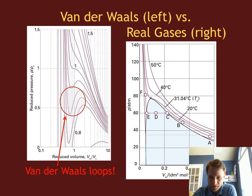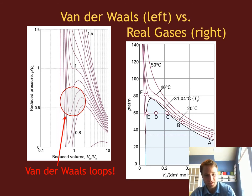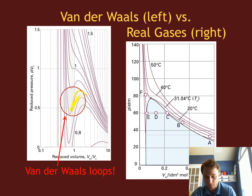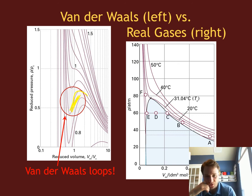The van der Waals equation of state does work better than the ideal gas equation, but it doesn't work everywhere. Specifically, there are what are called van der Waals loops, where as you reduce the volume, there's a case where the pressure decreases as well — which makes no physical sense. Decreasing the volume of a gas and having the pressure decrease never happens. So that's an unphysical effect, and the van der Waals equation of state does not hold under all pressure and volume ratios.